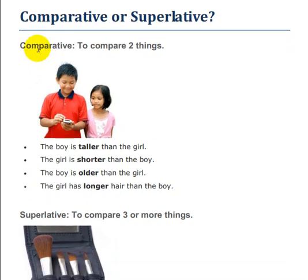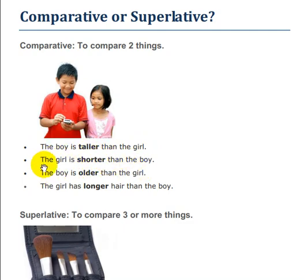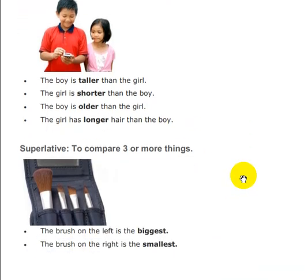Comparative is used to compare two things. For example: The boy is taller than the girl. The girl is shorter than the boy. The boy is older than the girl. The girl has longer hair than the boy.